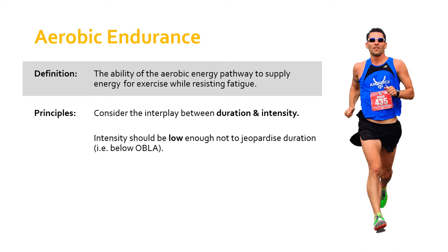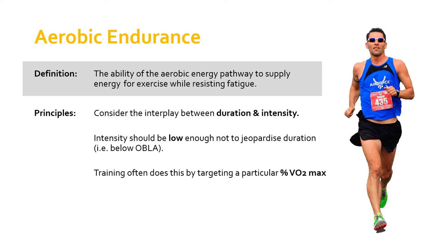The intensity should be low enough not to jeopardize duration, so it's got to be below the Onset of Blood Lactate Accumulation. One way to measure this is to actually test for blood lactate, but that's not really practical in a training setting — it's quite invasive, requiring a blood sample. So what you would do is use percentage VO2max and target that percentage to make sure you're roughly just at or just below the OBLA, ensuring intensity is high enough for aerobic endurance adaptations but not so high you're tipping into muscular endurance.